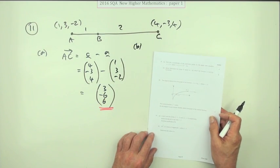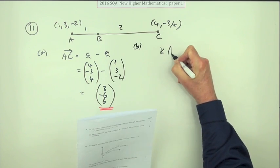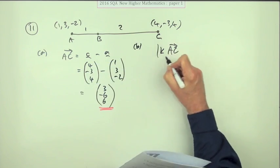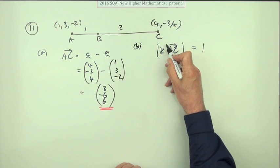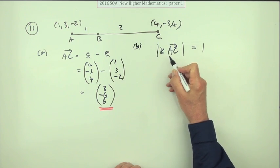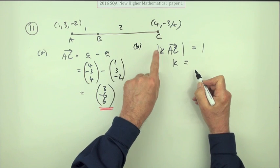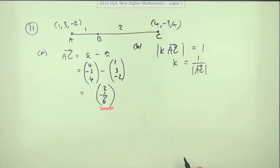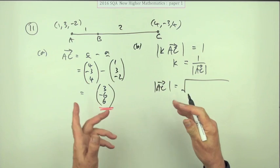Part B: K times AC is a vector of magnitude 1, meaning it's a unit vector, so find K. If you want to make the length come to 1, you divide by the length of AC. K would be 1 divided by the magnitude of AC. What is the magnitude of AC? We've got AC from part A. That would be 3² + (-6)² + 6², then take the square root.